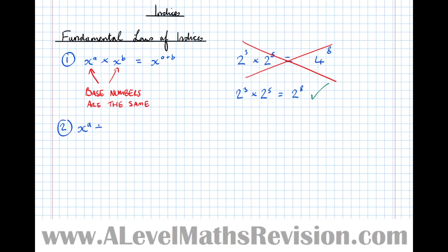For division: x to the power of A divided by x to the power of B equals x to the power of A minus B. Again, this only works when the base numbers — in this case x — are the same.